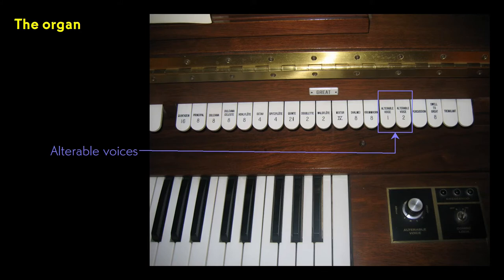What this model had, that was unique for the time, was a set of alterable voices. These expanded the set of instruments available by allowing another instrument, such as a clarinet or trumpet, to have its tone programmed into the instrument by the performer.